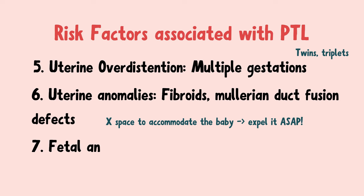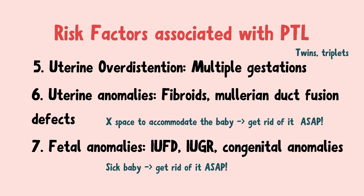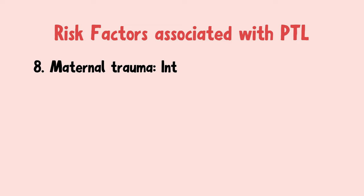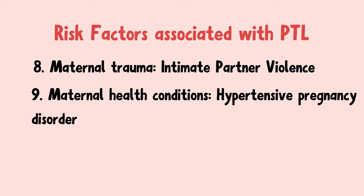Fetal anomalies such as intrauterine fetal demise, intrauterine growth restriction, and congenital anomalies have also been associated with preterm labor — if the baby is not healthy, the uterus will try to get rid of it as soon as possible. Maternal trauma caused by intimate partner violence, and conditions affecting the mother's health such as hypertensive pregnancy disorders and diabetes, can also lead to preterm labor.